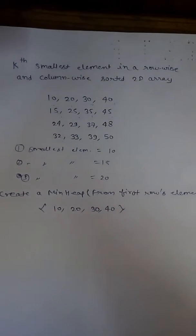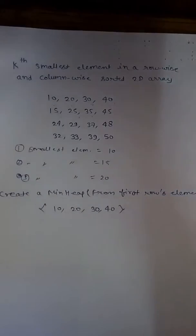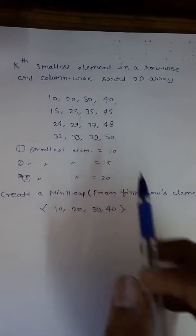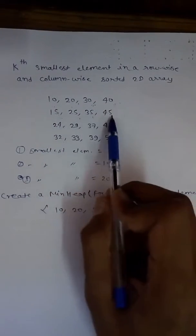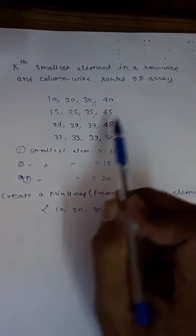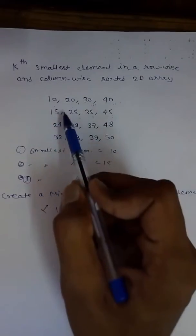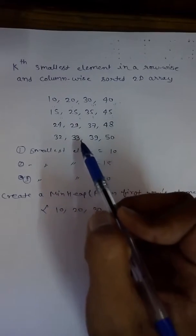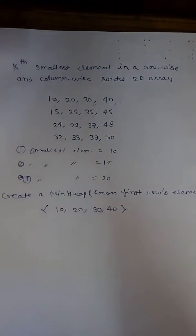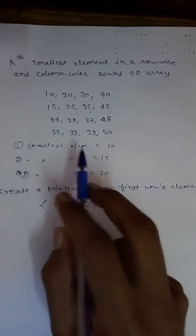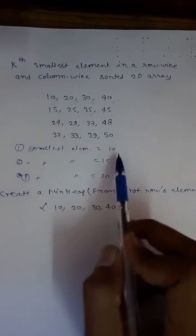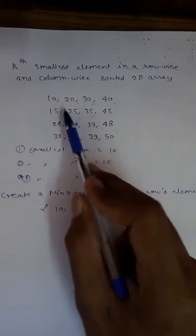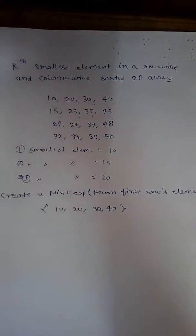Our question is: get the smallest element in a row-wise and column-wise sorted 2D array. We are given a 2D array that is row-sorted like 10, 20, 30, 40 and another row is 15, 25, 35, 45. It is also sorted column-wise. We have to find the Kth smallest element — for example, the first smallest is 10, second smallest is 15, and third smallest is 20.